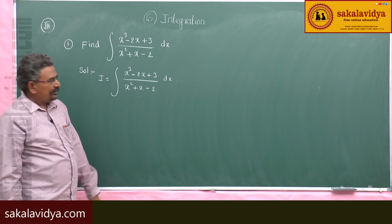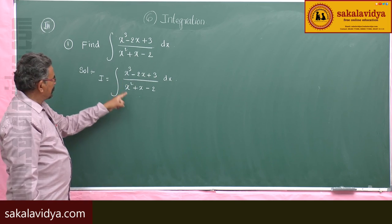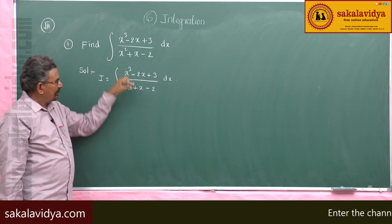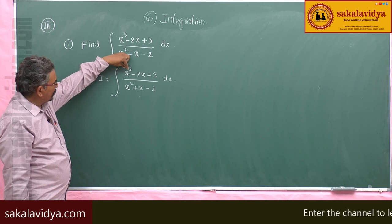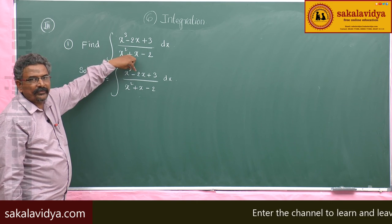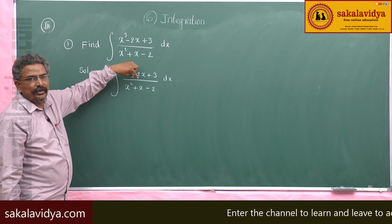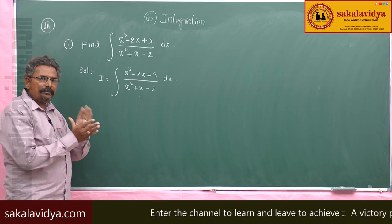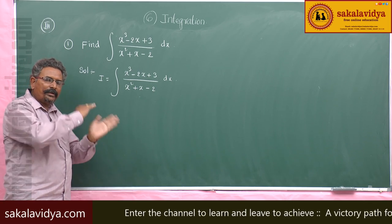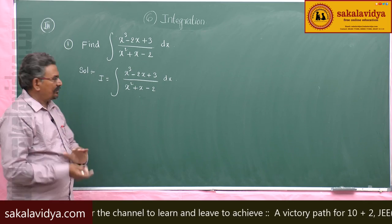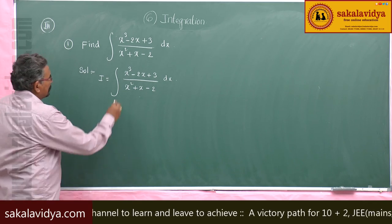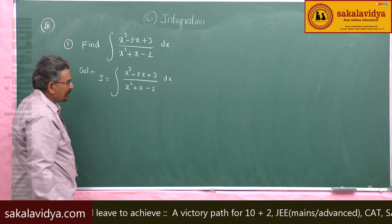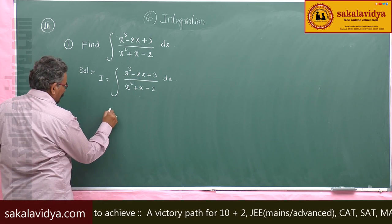Let us observe this rational fraction. This rational fraction is an improper fraction. If it is an improper fraction, we have to write it as a polynomial plus a proper fraction. That means this numerator is to be divided by x² + x − 2.